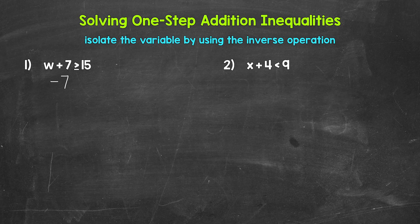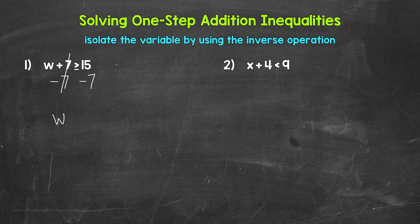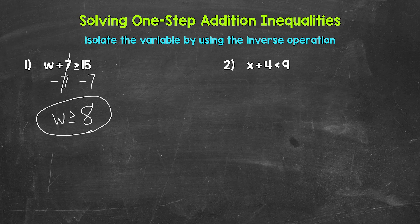So let's subtract seven from the left side of the inequality. Whatever we do to one side of an inequality, we must do to the other in order to keep it balanced. So subtract seven from the right side as well. These sevens cancel each other out. W is now isolated. So we have w is greater than or equal to, and then on the right side, 15 minus seven gives us eight.